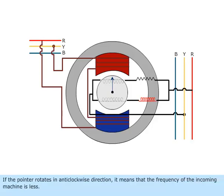If the pointer rotates in anticlockwise direction, it means that the frequency of the incoming machine is less. If the pointer rotates in clockwise direction, it means that the frequency of the incoming machine is more.